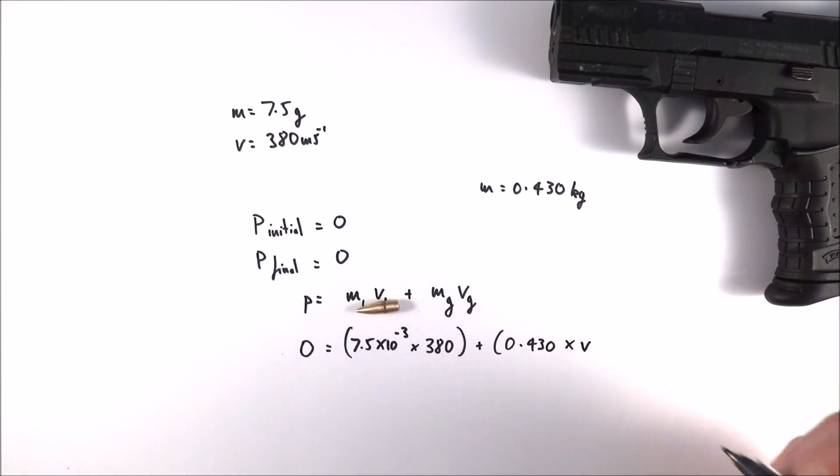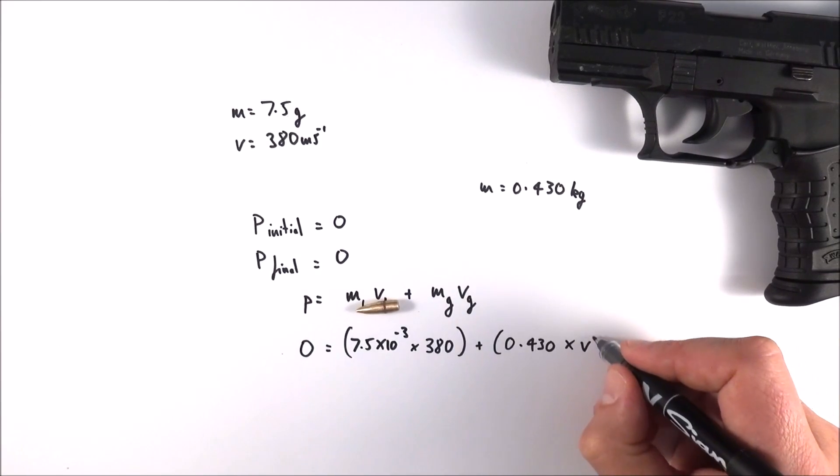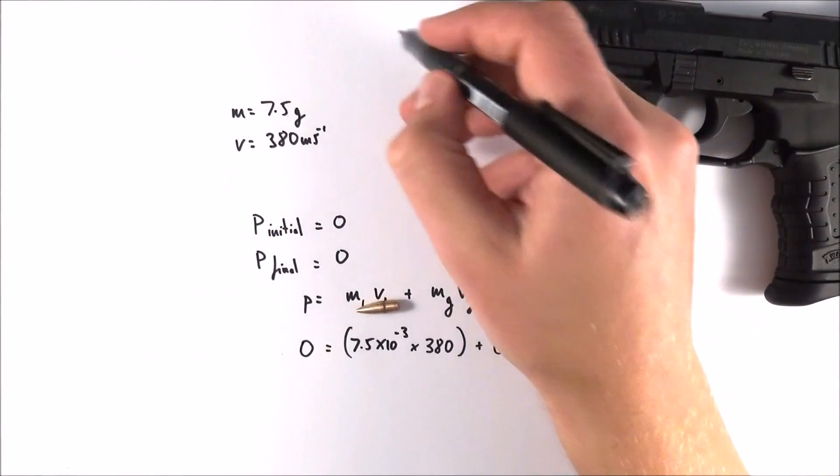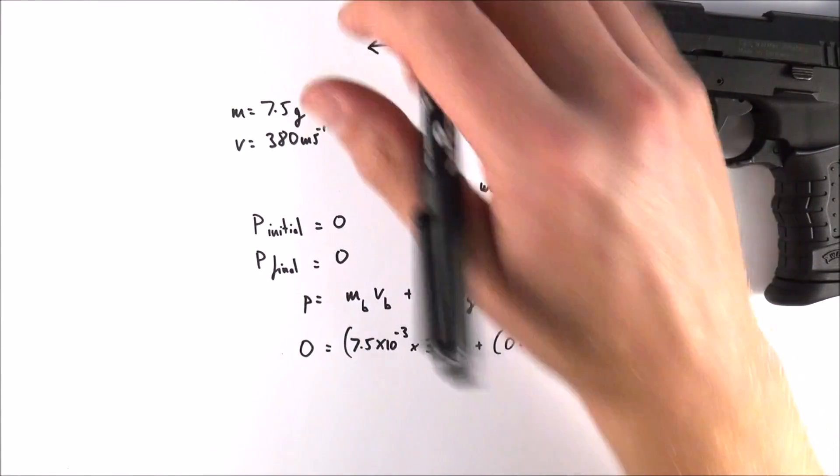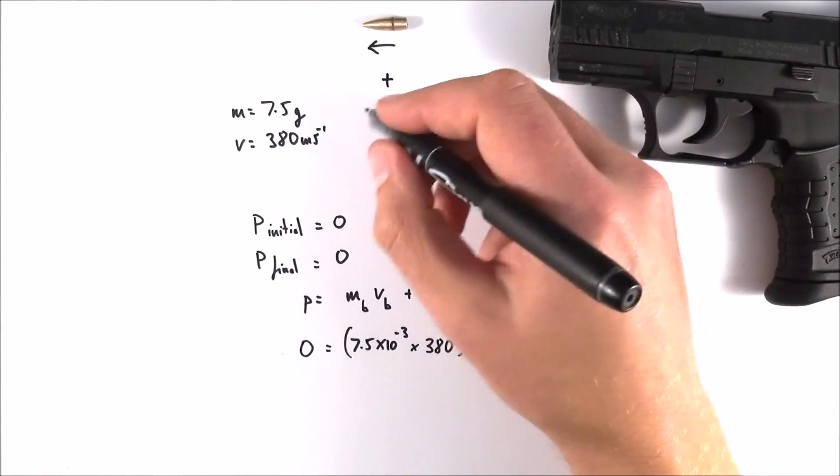In terms of the gun itself, well it's going to have a mass of 0.430, and we don't know how fast it's moving off, and I'm just going to call this V.